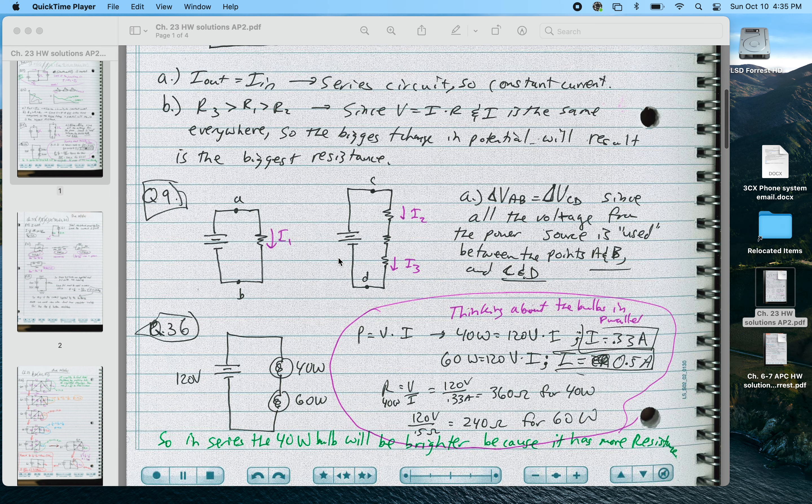For question 9, these diagrams ask to rank the currents and the voltages. Well, the voltage across AB is the same as the voltage across CD because both of those are completely surrounding the same battery. So it's the full voltage of the circuit.